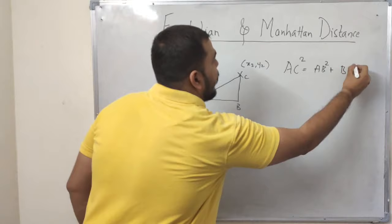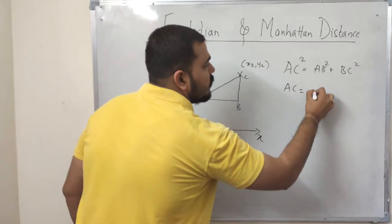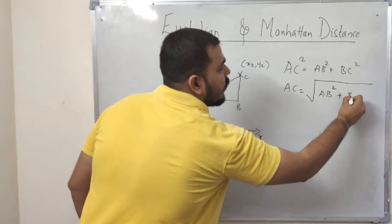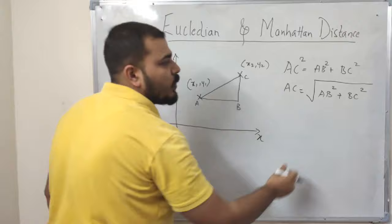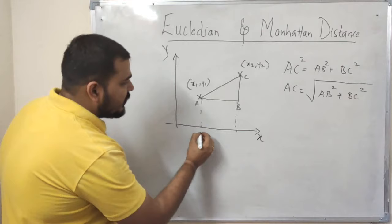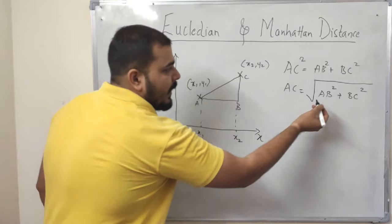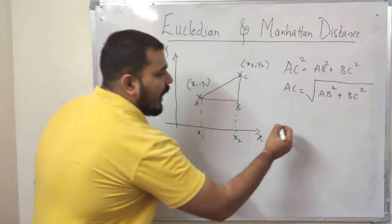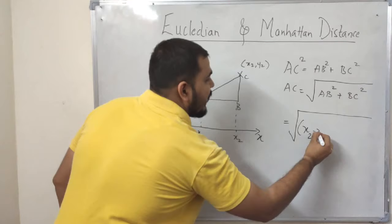So this is the simple Pythagoras theorem. In short, what I can write: AC is equal to square root of AB square plus BC square. Now let us try to replace this AB square and BC square and see how the formula will look like. I want to calculate this AB value. Now you know that this AB value, if I just try to project it towards the x-axis, this value will become my x1 and this value will become my x2. So the AB value can be calculated by subtracting x2 with x1. So I can basically write this as x2 minus x1 whole square plus—